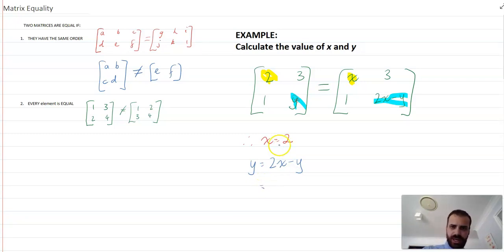Now we can say, well we know that x is equal to two, so we can sub that in there. So we can say that y equals two times two minus y, so y equals four minus y.